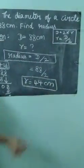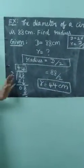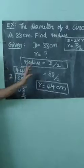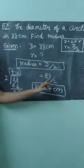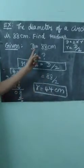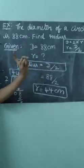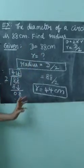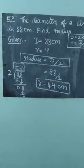Understand? To find radius, do division. To find diameter, do multiplication. That's all. Thank you.